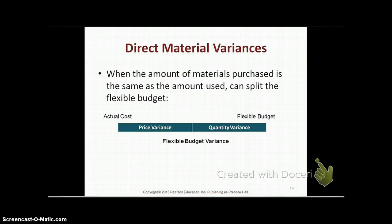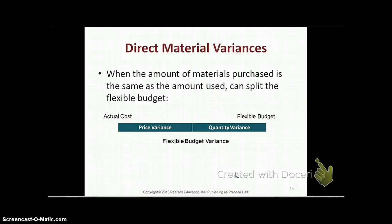We'll start with the direct material variances. The direct material variances split your flexible budget variance into two components: the price variance and the quantity variance. The only time that the price variance equals your flexible budget variance for direct materials is if the amount of materials you purchase is the same as the amount of materials that you use — in other words, if there's no inventory and you use up everything that you purchase.